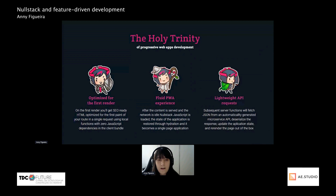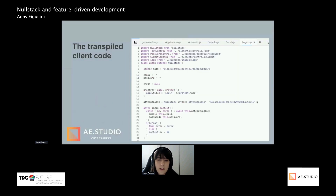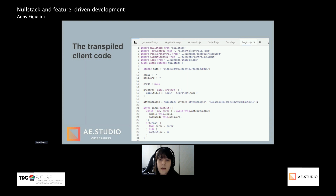We've got the holy trinity of progressive web apps. We've got SEO through server-side rendering. Every application you start with NoStack is PWA-ready. And we've got lightweight API requests because we optimized our API requests to the max. This is the transpiled client code — the 'attemptLogin' function was replaced by 'nostack.invoke,' so the client does not have access to server code, it can just invoke it. All classes are hashed and safe-listed, so this client class can only invoke its own counterpart server class methods, and only if the hash matches — you cannot call arbitrary code from the client.